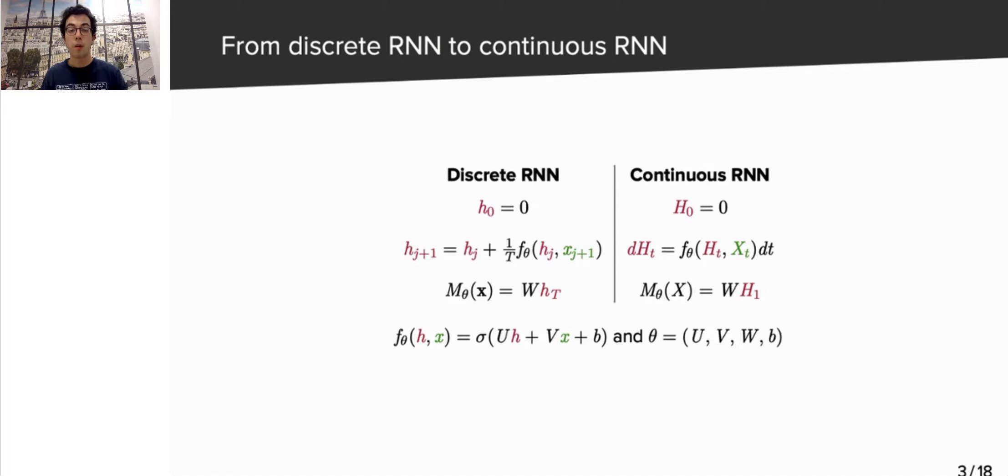So, coming back to the RNN, we have now two models, a discrete one and a continuous one. Note that the discrete RNN is formulated in a residual manner and with an additional 1 over T factor. As T goes to infinity, this model converges toward the continuous model. It is quite easy to show that both models are equivalent up to some constant over T using standard Euler estimates. As a remark, note that here and in the following, we use lowercase notations for discrete variables and uppercase notations for continuous variables.